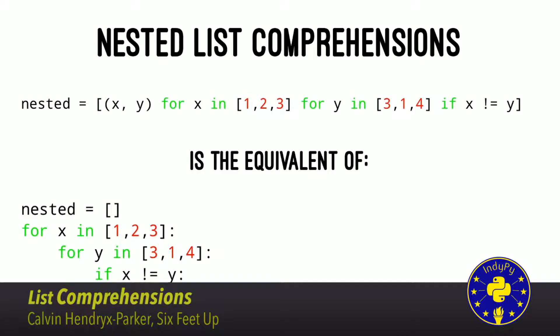It is possible to nest your list comprehension. If you want to build a tuple of x and y, you just include the for statements in the same order you would include them in your normal for loop. So for x in 1, 2, 3, and for y in 3, 1, 4 — you can include your conditions as well. Those can be tacked on in the same order they would be inside your for loop. It's really easy to go from any for loop into a nice clean one-liner. Here we're doing nested.append(x, y), and that tuple x, y appears at the very beginning of our list comprehension.